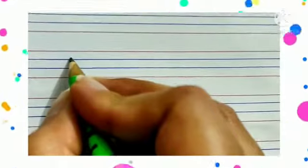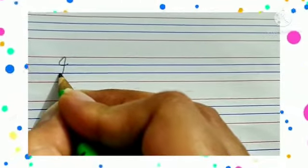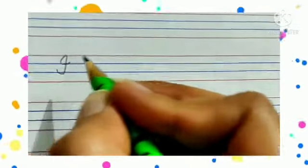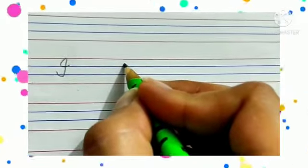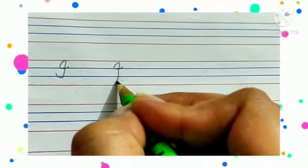First of all, take a small sleeping line on the blue line, then go up, touch the upper red line, come down, and make a curve on the left-hand side. I says /ee/.